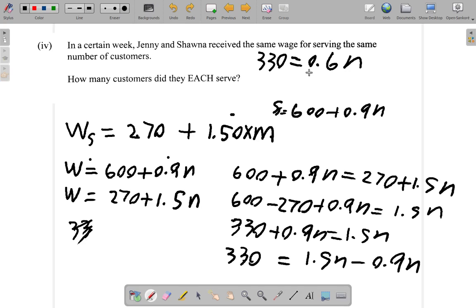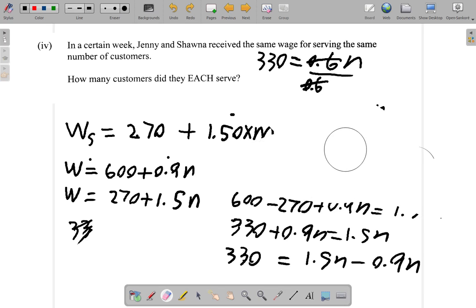So after that I can divide by 0.6. Let me do that again - I divide by 0.6. 0.6 will cancel itself there on the right, so what I have is just N. If I divide on the right, I must divide by the same thing on the left as well.